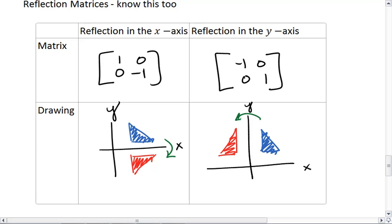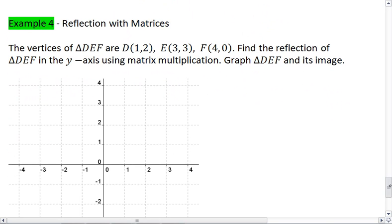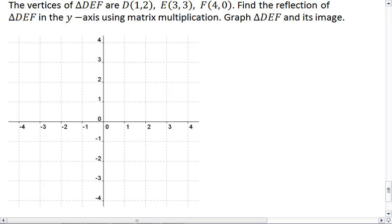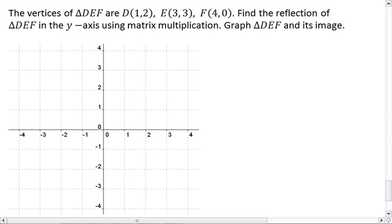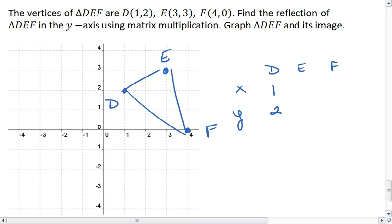So let's look at a quick example. We have the vertices of triangle DEF are D, which is 1, 2, E is 3, 3, and F is 4, 0. We can create a matrix for this polygon using those coordinates, where DE and F are our columns, and X and Y are our rows. D is 1, 2, E is 3, 3, and F is 4, 0.